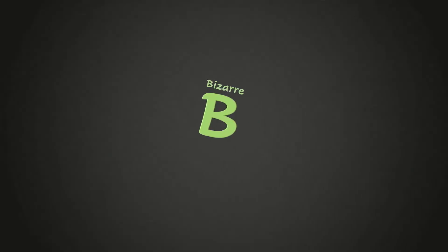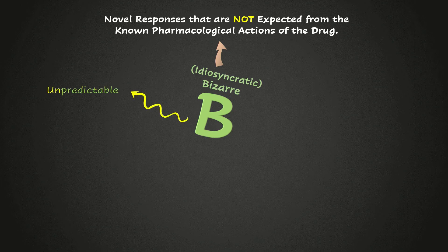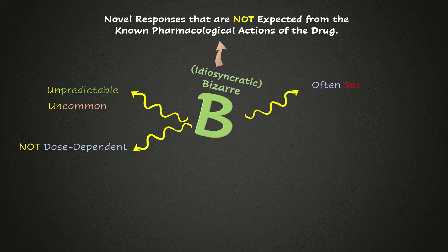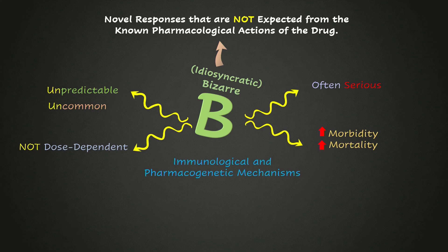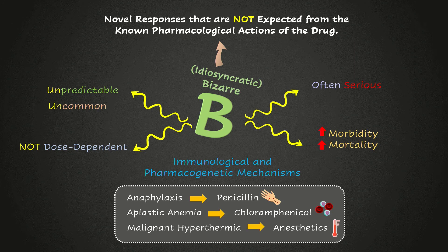Moving on to type B or bizarre reactions, which are also termed idiosyncratic reactions. As the name implies, these are novel responses not expected from the known pharmacological actions of drugs. Therefore, they are unpredictable, less common, and may only be discovered for the first time after the drug has already been available for general use. In contrast to type A, they are not dose-dependent. Despite being less common than type A, they are often serious and associated with high morbidity and mortality rates. They are often caused by immunological and pharmacogenetic mechanisms. Examples include anaphylaxis in response to penicillins, aplastic anemia caused by chloramphenicol, or malignant hyperthermia in response to anesthetics.